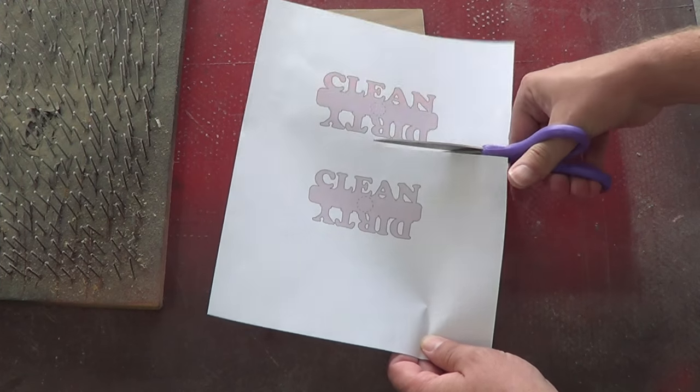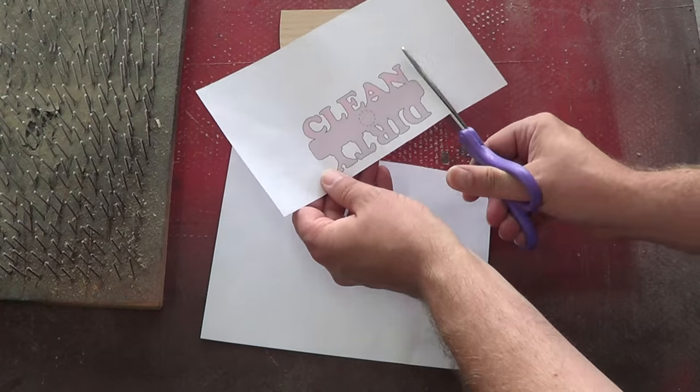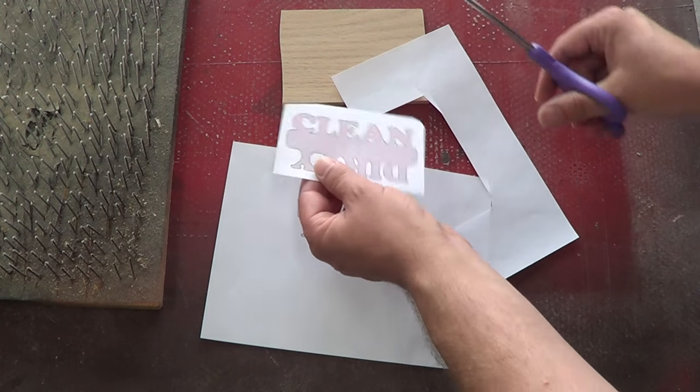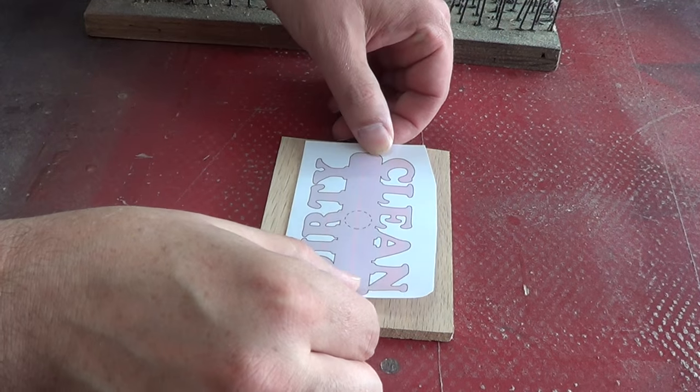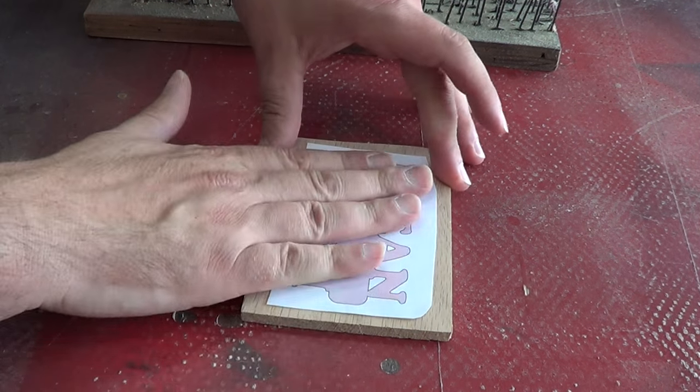I printed it out on the printer and now I'm going to cut out my pattern. I ended up choosing the three and a half inch size. Add a little bit of spray adhesive to the back and then I'm applying it directly to a piece of scrap oak that I had lying around.